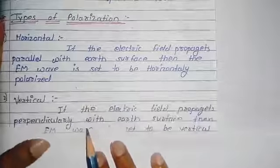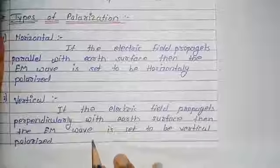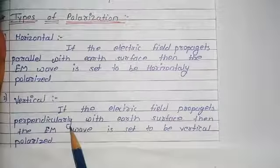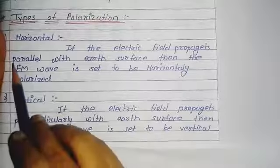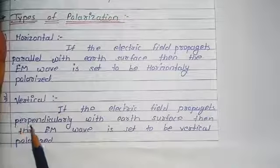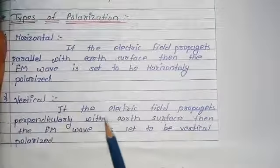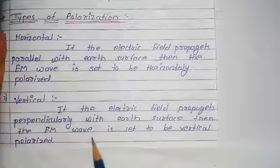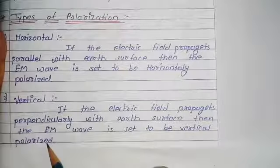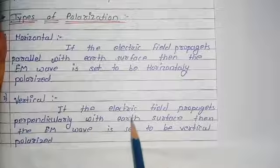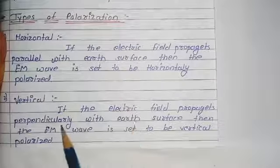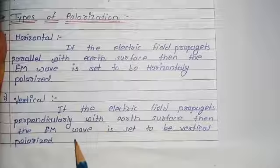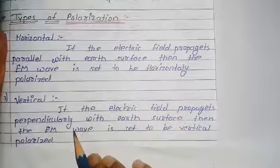The opposite of horizontal polarization is vertical polarization. If the electric field propagates perpendicularly to the earth's surface, then the EM wave is said to be vertically polarized.